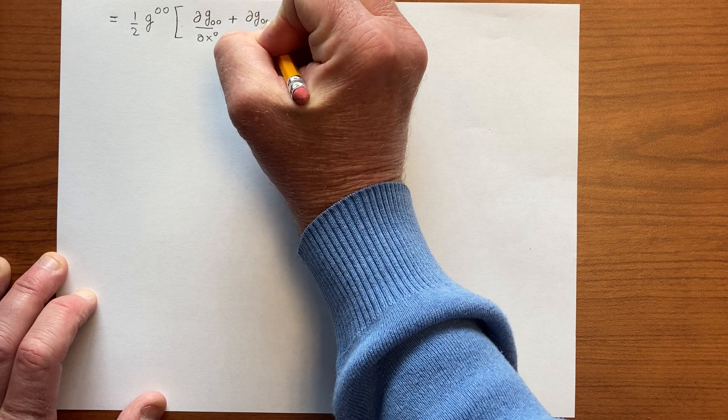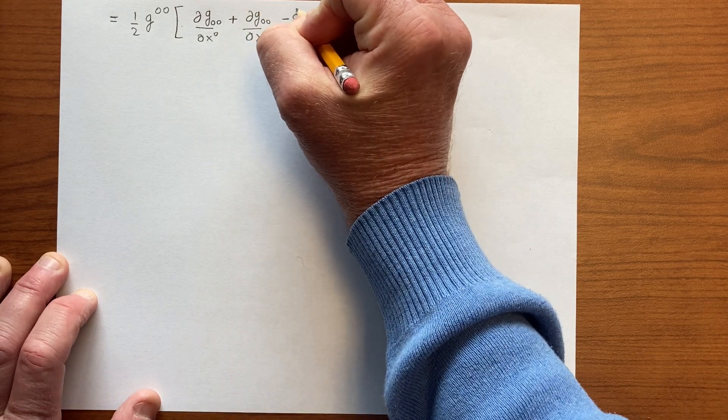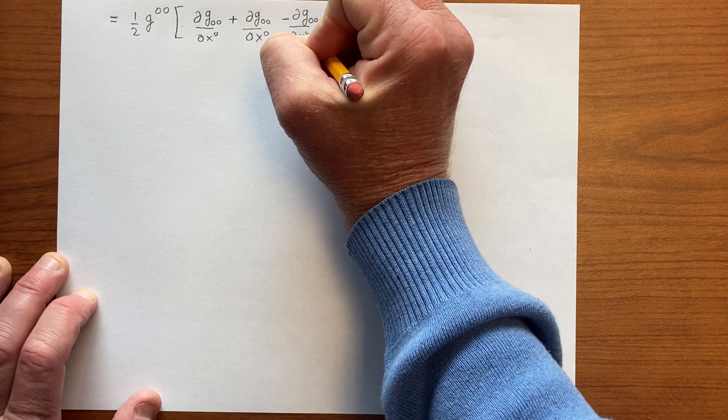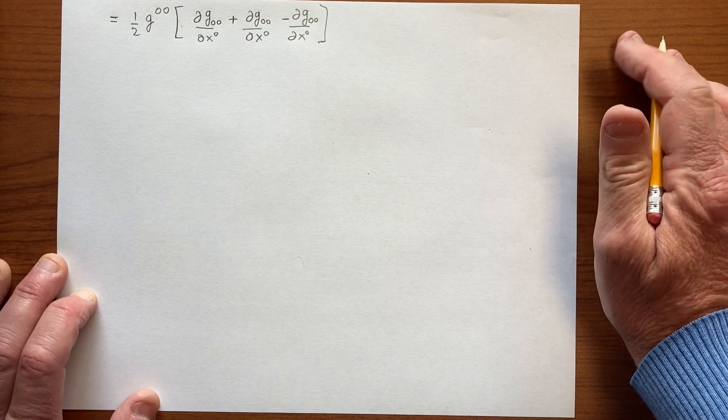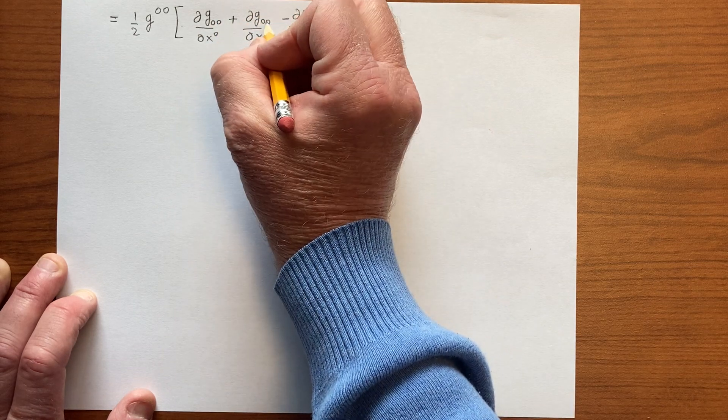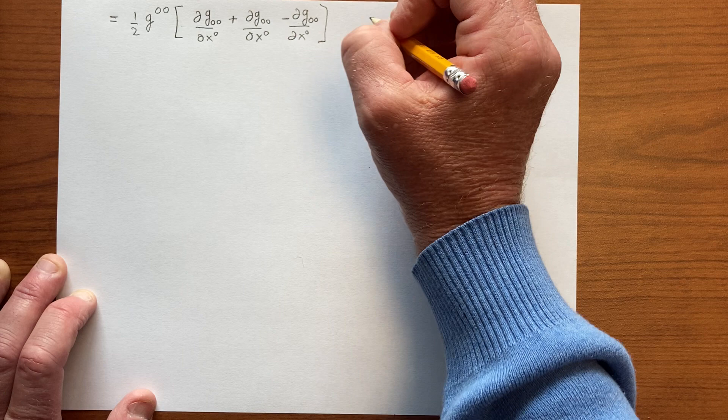Minus ∂g_00/∂x^0. Of course, we know that all of these are 0 because g_00 is just a constant.